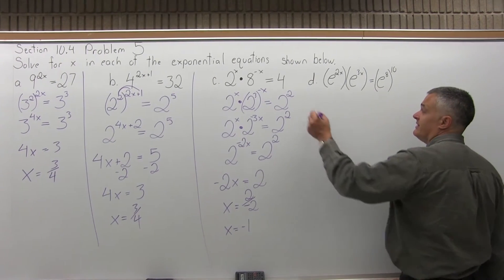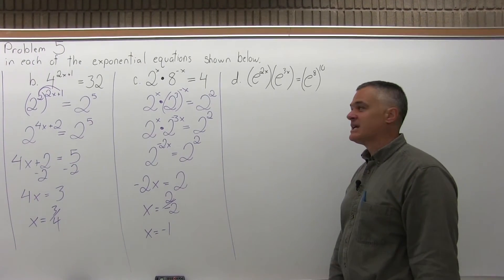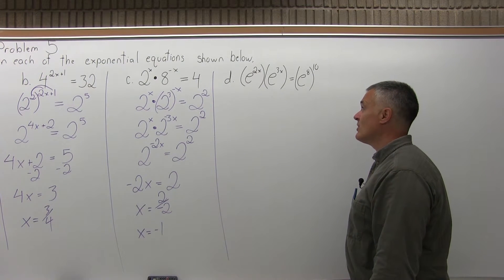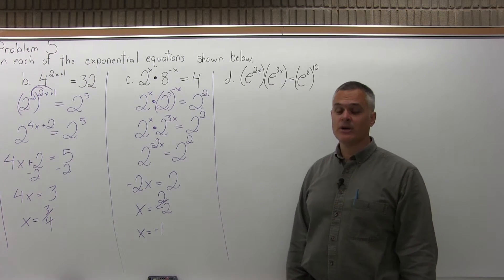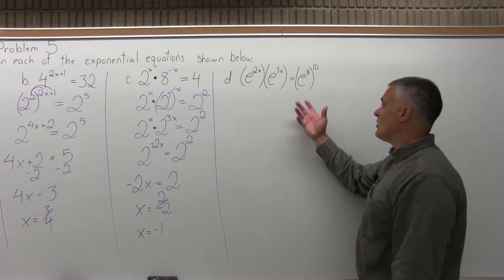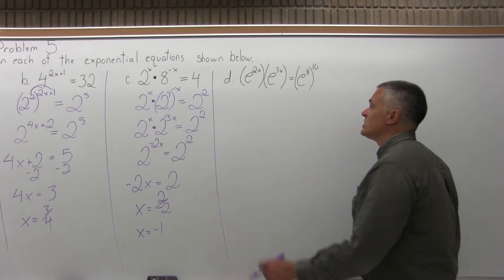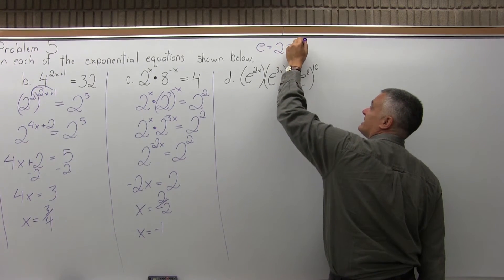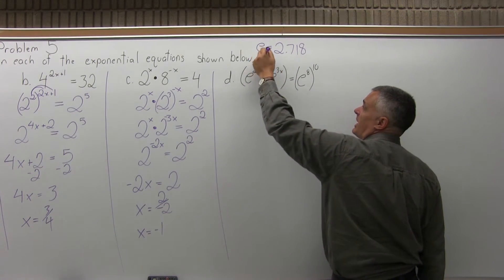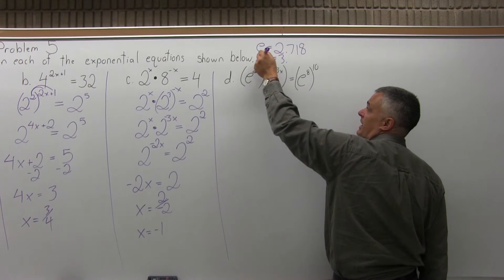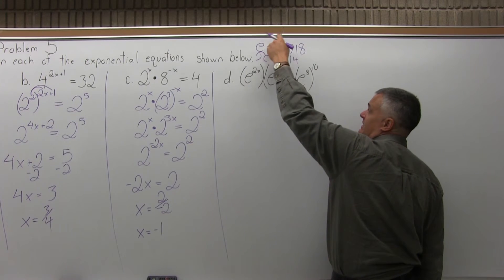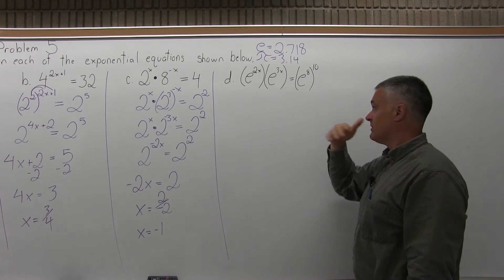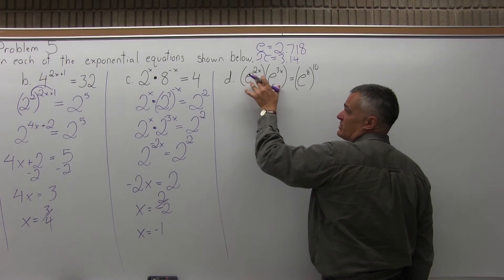Finally, part D looks like the toughest, but it's really not. It says solve the exponential equation e to the 2x times e to the 3x equals e to the eighth raised to the tenth power. What is e? In class we talk about how e is a special number that shows up so often in science it gets its own symbol — just like pi in geometry. Pi is 3.14 and goes on and on. E is 2.718 and goes on and on. It's just a number, so we can leave it as e.